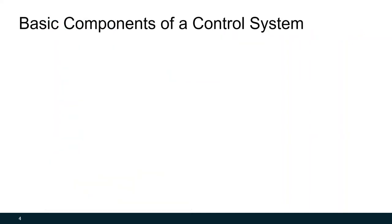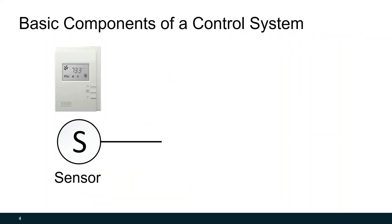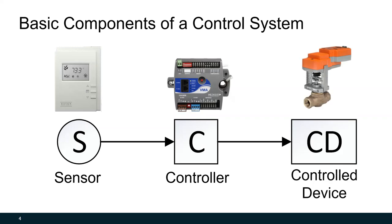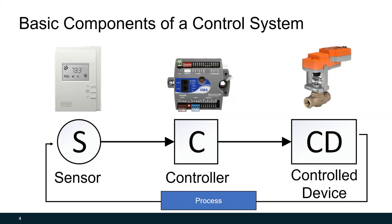In the previous webinar we learned about the basic components of a control system: the sensor, the controller, and the control device. These three components form a control loop which works to affect the process to help us get to the conditions that we want for the building or whatever process we're trying to affect. That loop will repeat over time and ideally we'll get to the values that we want it to be at.